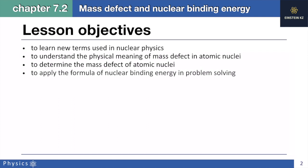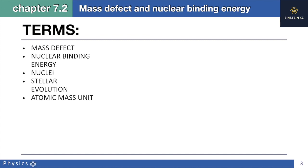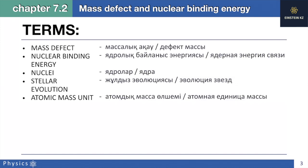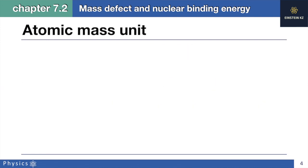The last objective is to apply the formula of nuclear binding energy in problem solving. There are five key terms that are very important to know, so let's quickly go through their pronunciation and translations. The first term is mass defect, the second is nuclear binding energy, the third is nuclei, the next is stellar evolution, and finally atomic mass unit.